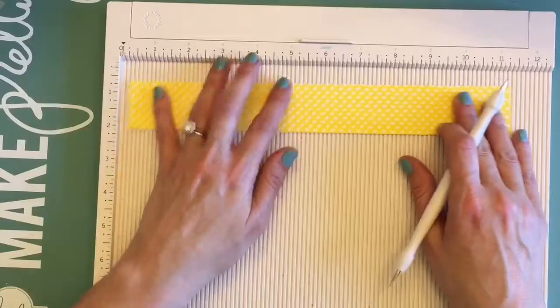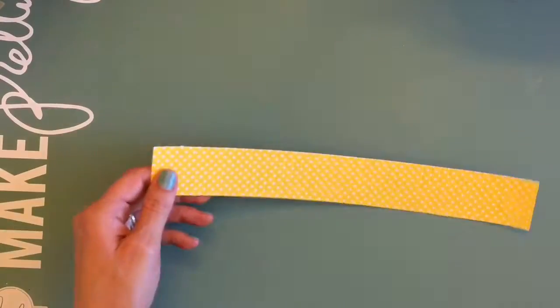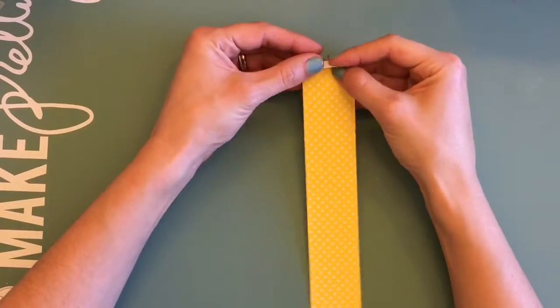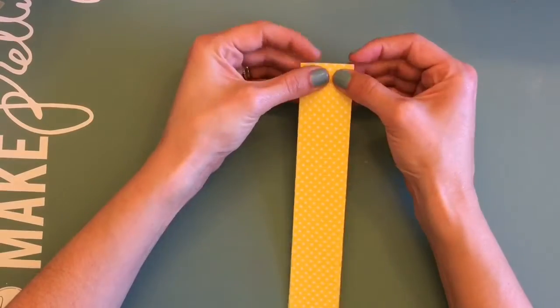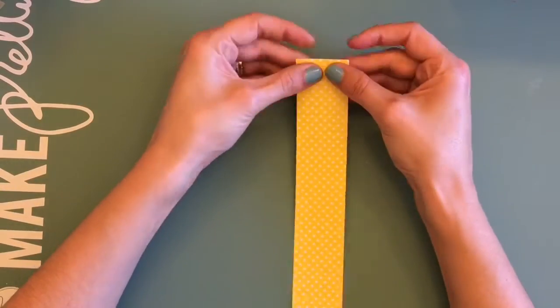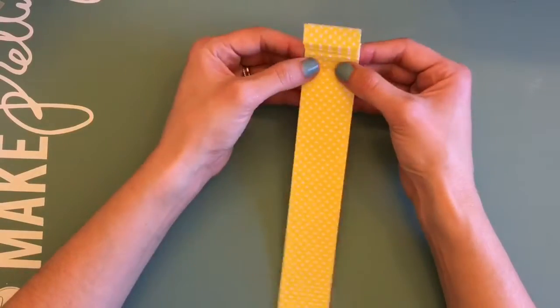I think they're called rosettes, I'm not even 100% sure about that part. But I just created those score lines by a fourth of an inch, and then you just go back and forth creating these pleat-type things. This is what's going to give you the dimension whenever you create the round rosette flower-type looking part of the wand.